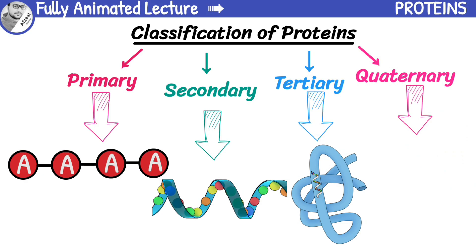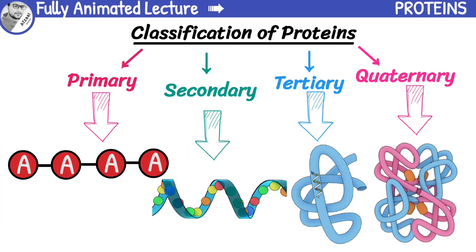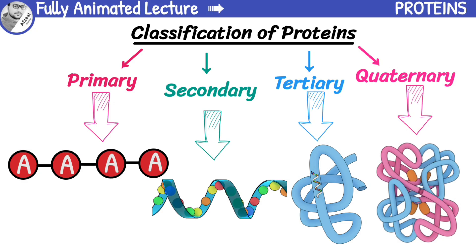Finally, we have quaternary proteins. These are made up of multiple tertiary protein structures that come together to form a larger protein complex.